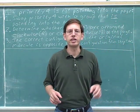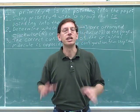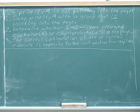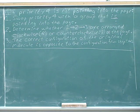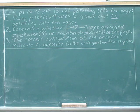Now that we understand the single swap rule, we're ready to see the method for dealing with case two — what do you do when the number four priority is not pointing into the page? Here's the method: If the priority four group is not pointing into the page, step one, swap the priority four group with a group that is pointing into the page. Step two, determine whether priorities one to two to three are arranged clockwise (R) or counterclockwise (S) on the page. Step three, the correct configuration of the original molecule is opposite to the configuration that we got from step two.